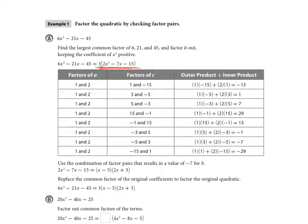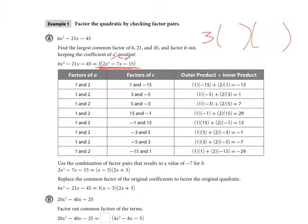Next we need factors that give us a sum — technically a difference, because this term is negative. We need factors of negative 7. When we factor, we have the common factor of 3 outside and we know we're going to have two binomial factors. To get a leading term of 2x², the only option is to multiply 2x times x.